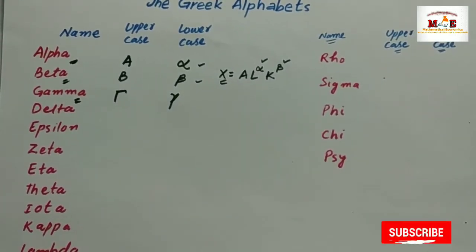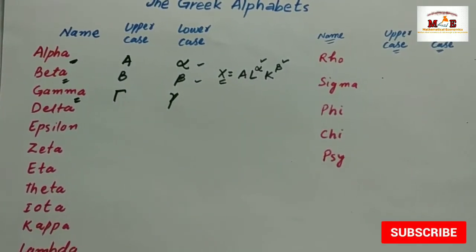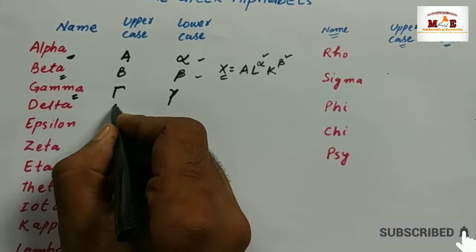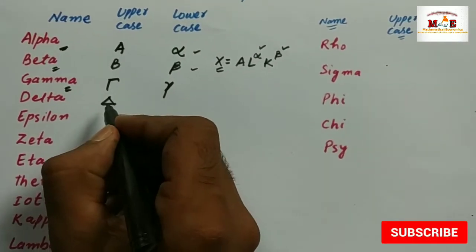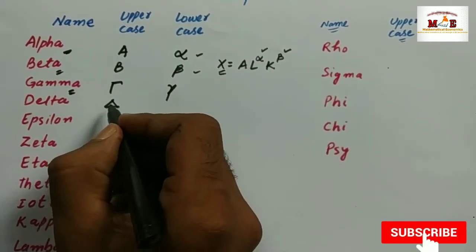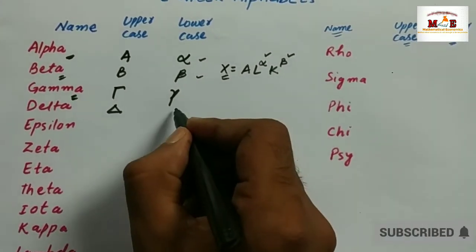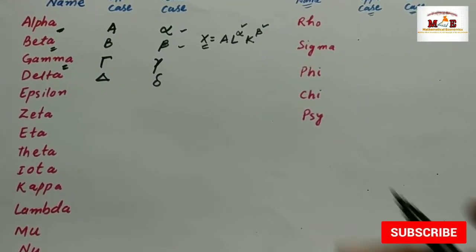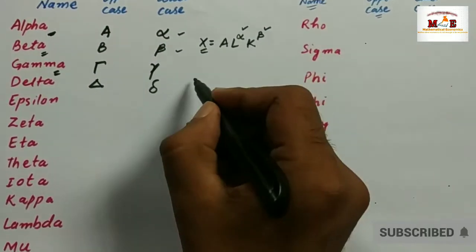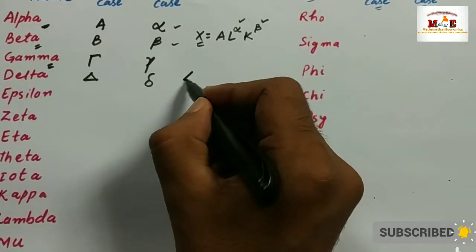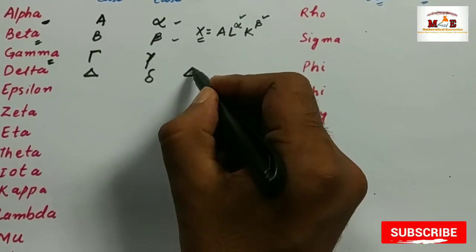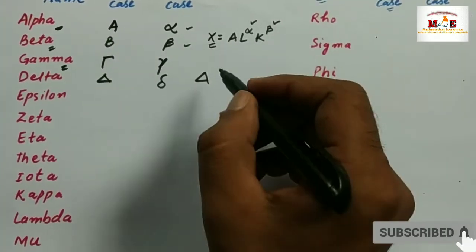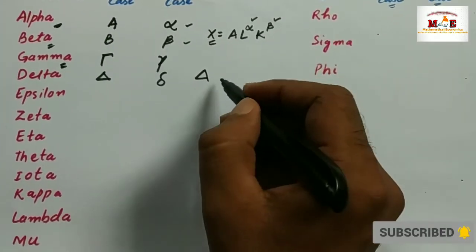Then the next one is delta. Its uppercase is like this triangle and the lowercase is like this. Mostly delta is used to represent change in economic variables.